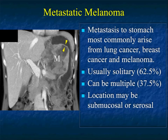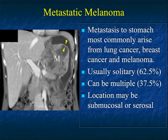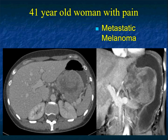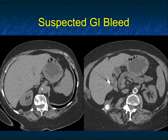Melanoma is always one of those entities with unusual appearances that can look like anything. Mets to the stomach can come from lung cancer, breast cancer, and melanoma. They're usually solitary but can be multiple, and commonly in the submucosal region but can be serosal. Here is a large melanoma met which looks very much like a GIST tumor — I actually read this as a GIST tumor. The patient had abdominal pain, was young, with an exophytic, somewhat necrotic mass — classic appearance of a GIST tumor.